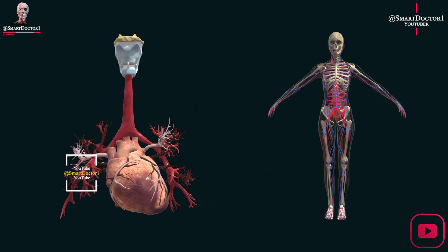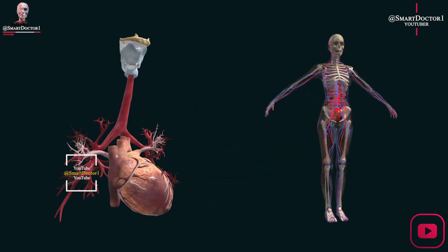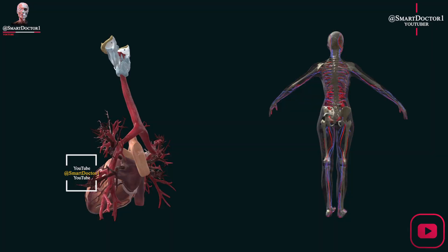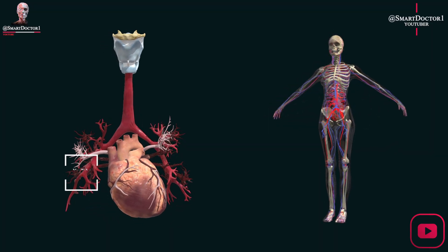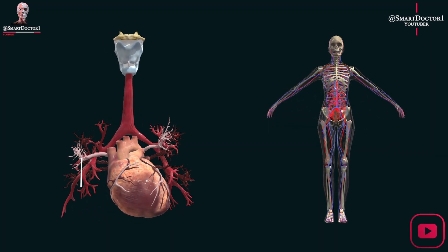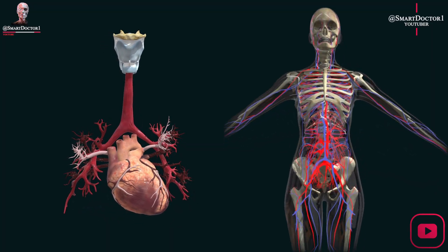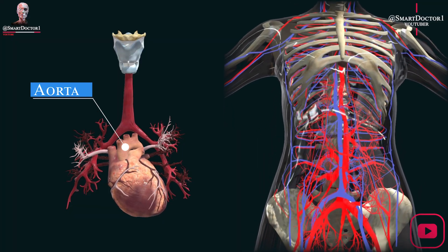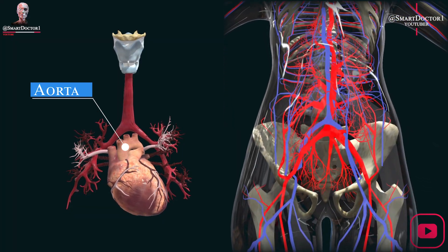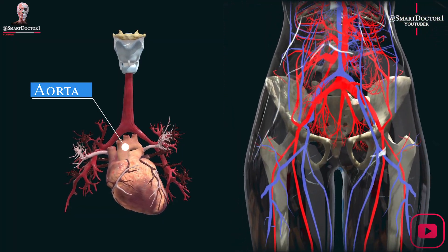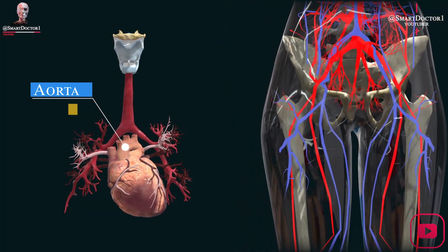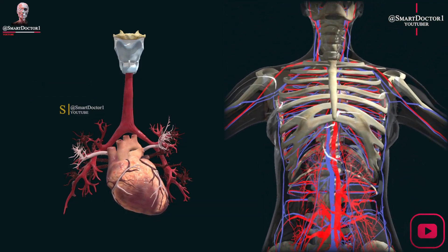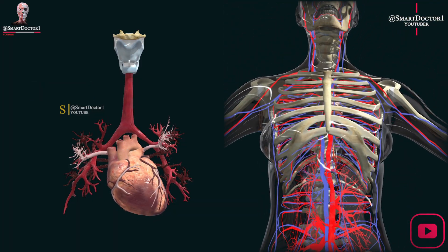Anatomy of the major blood circulation. The major blood circulation, or systemic circulation, carries oxygen-rich blood from the heart to the body's organs and tissues through the aorta and smaller arteries, such as the carotid, subclavian, and renal arteries.